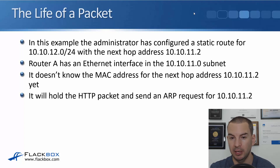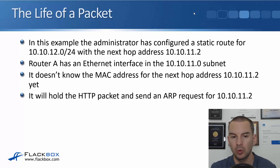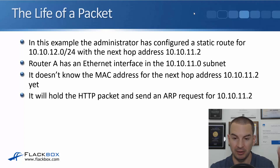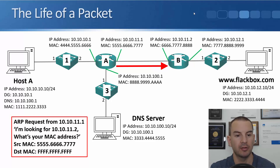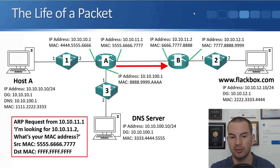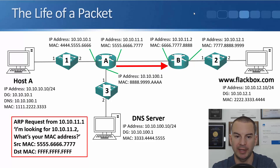Router A has an Ethernet interface in the 10.10.11.0 subnet, but it doesn't know the MAC address for the next hop address of 10.10.11.2 yet. So it will hold the HTTP packet from host A and send an ARP request out that interface in the 10.10.11 subnet looking for 10.10.11.2. The ARP request is from 10.10.11.1, asking for the MAC address of 10.10.11.2, with a source MAC of 5.6.7 going to the layer 2 broadcast address of ff.ff.ff.